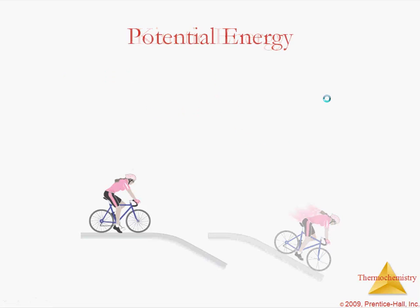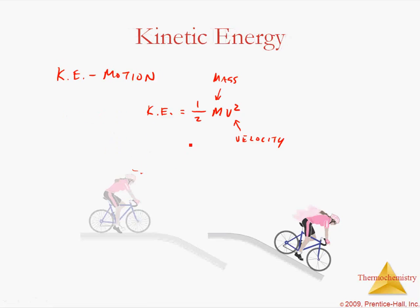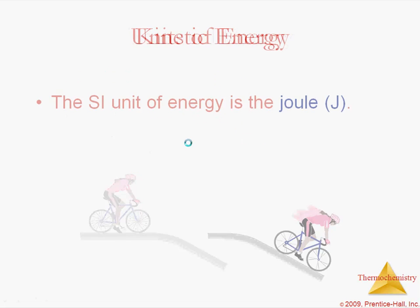Let's go back to potential energy. Potential energy has to do with the mass of the object times the force of gravity — this is acceleration due to gravity — and then h is height, or how far off the ground something is. That's how you calculate potential energy. There's a homework problem that will let you practice that.